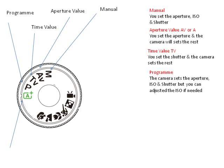Moving on to the green square — some of you just have a green square, some of you have a green A, some of you have both. Basically it's auto, and it's fully auto, so the camera will set your ISO, your shutter, and your aperture.